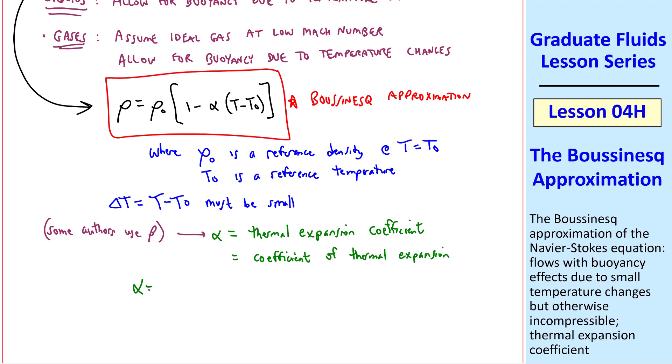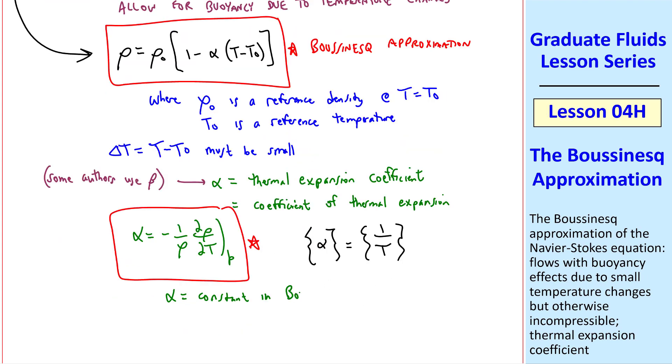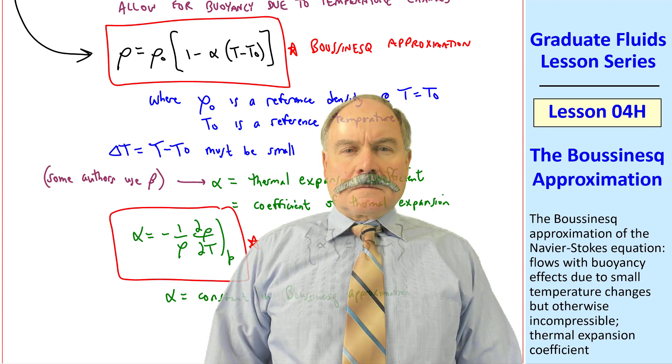By definition, alpha is minus 1 over rho, del rho del T, evaluated at constant pressure. This is our formal definition of alpha. Alpha has dimensions of 1 over temperature. Alpha is constant in the Boussinesq Approximation.